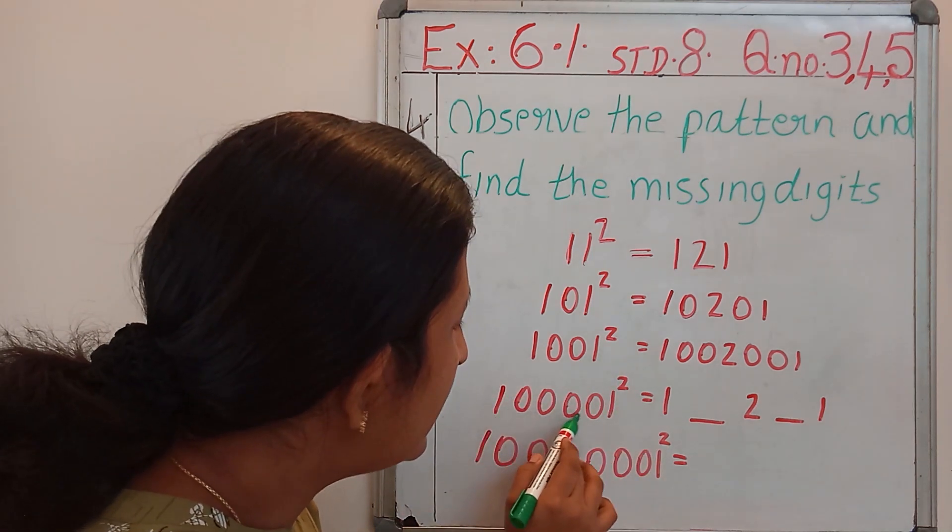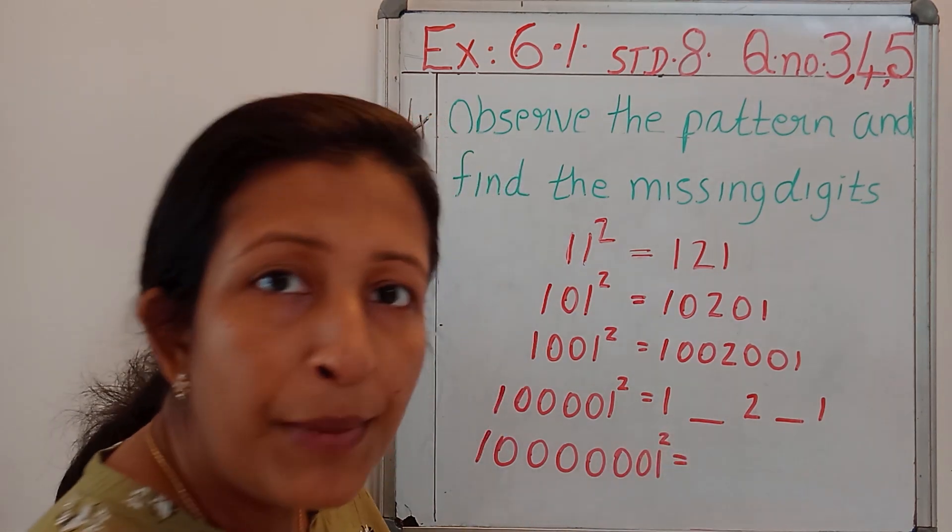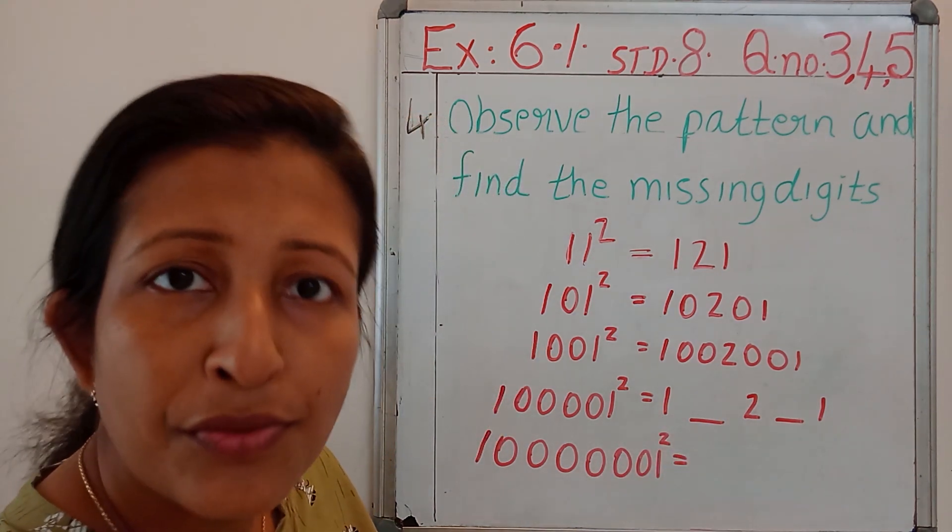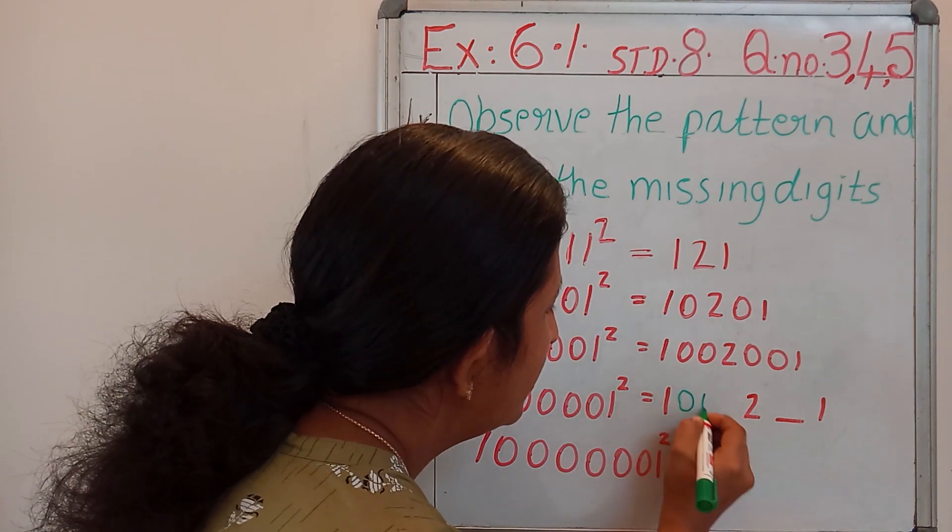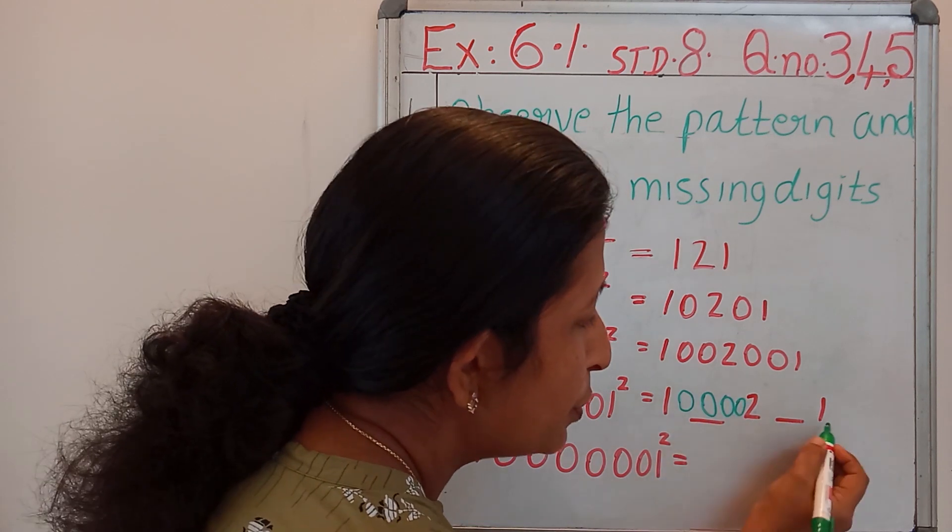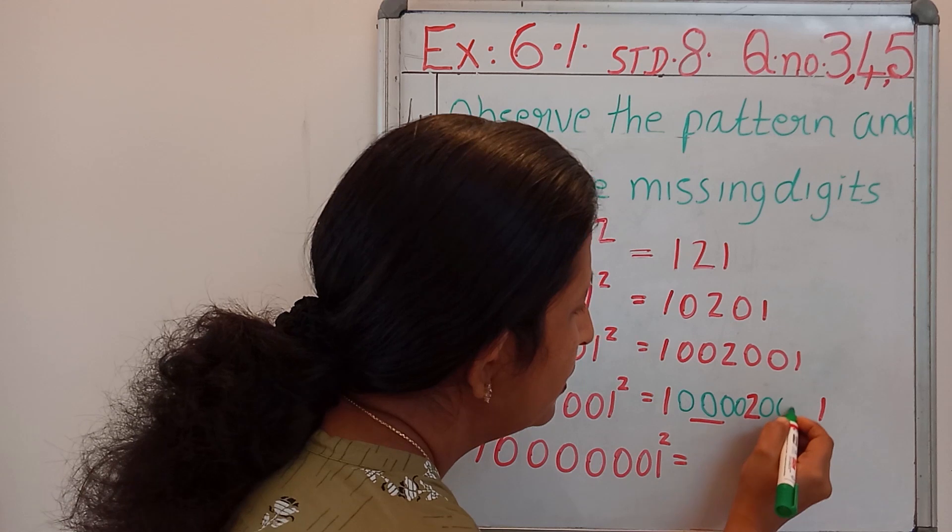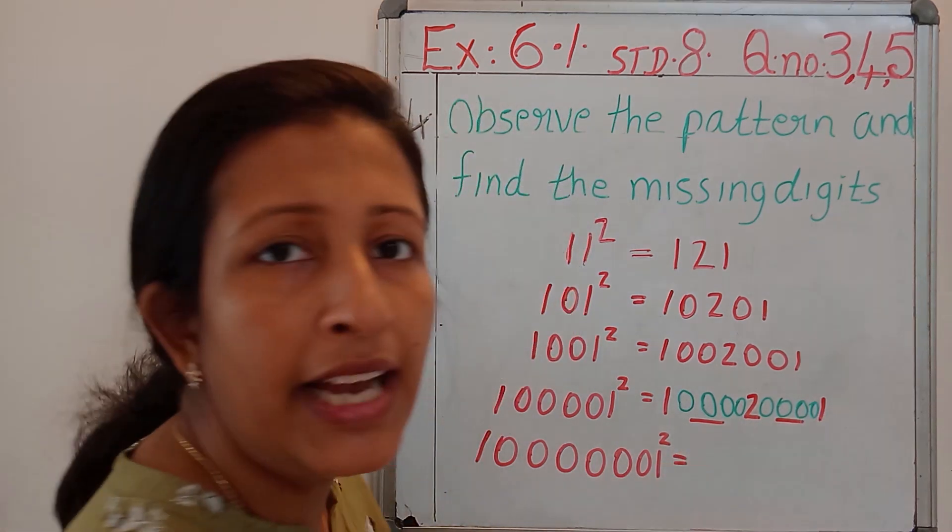Here, 1, 2, 3, 4 zeros. So in between 1, 2, 1, how many zeros should we write? Four zeros. So this is the answer.